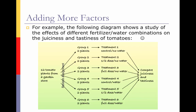The following diagram shows a study of the effectiveness of different fertilizer and water combinations on the juiciness and tastiness of tomatoes. We take 12 tomato plants from a garden store and randomly assign them to six different groups, two plants in each group. Each group receives a different treatment: treatment one is control with no water, treatment two is half dose with no water, treatment three is full dose with no water, treatment four is control with watering, treatment five is half dose with watering, and treatment six is full dose with watering. Then you pick a tomato from each group and compare the juiciness and tastiness.